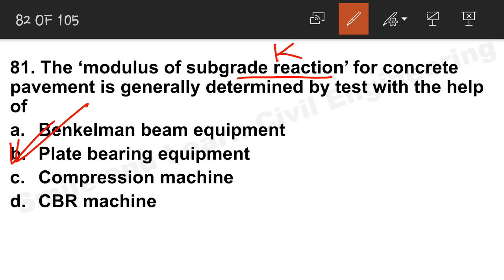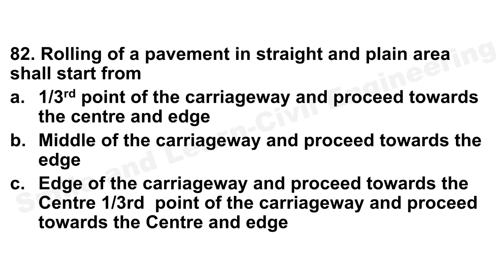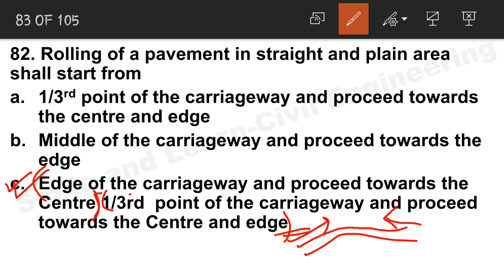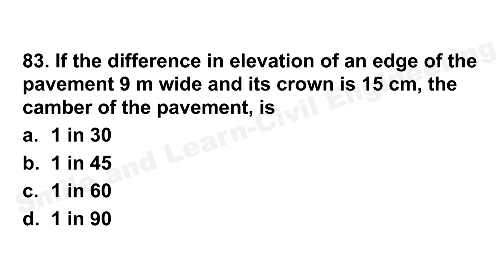Question 81: Modulus of subgrade reaction for concrete pavement is generally determined by the plate bearing test. Option B is the correct answer. Question 82: Rolling of pavement in a straight and plain area is done starting from the edge and proceeding towards the center.